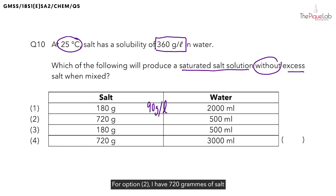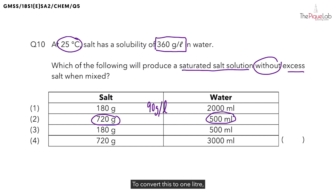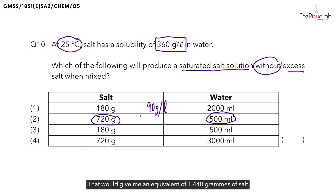For option two, I have 720 grams of salt dissolved in 500 ml of water. To convert this to one litre, I have to multiply both values by two. That would give me an equivalent of 1,440 grams of salt dissolved in one litre of water for option two.